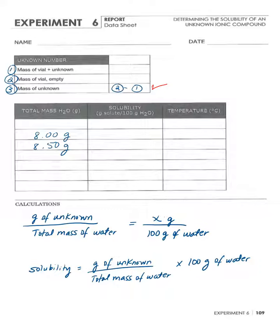Then we add 0.5 grams each time we repeat the experiment. To find the solubility, you have the mass of your unknown divided by the mass of the water in this column.